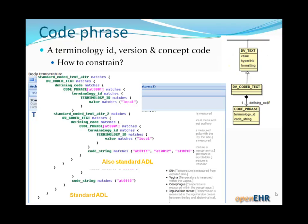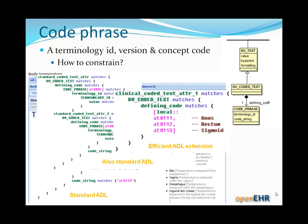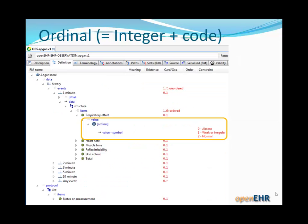So we can do a bit better than that in standard ADL. And you can see two possibilities there. If you just concentrate on the bottom one there, standard coded text attr2, same thing. DV_coded_text, defining code matches. Now we're saying a code phrase with a terminology ID and also a code string. And now we're going to allow it to match one of a number of possible values. What we did, as it turned out, in ADL was to go a little bit better and add a piece of more efficient syntax to ADL to make it very, very clear that the defining code matches three possible code values from the local terminology set. Where it says local there, of course, it could say LOINC, it could say SNOMED or anything else.